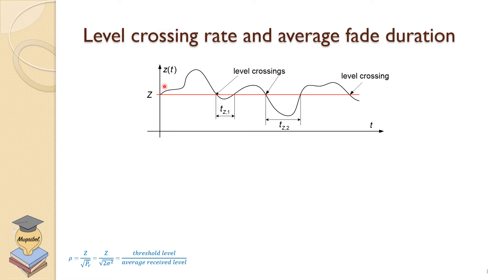So we want to know the level crossing rate, the crossing rate of this level. How many times do we go up and down? How many times we cross, we go below the required level. And we want to know that if we cross the level, how long we are going to stay there. And that's the average fading duration.